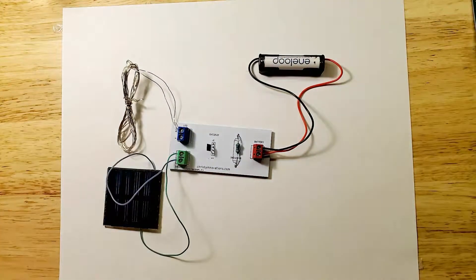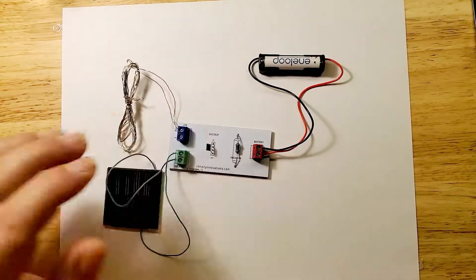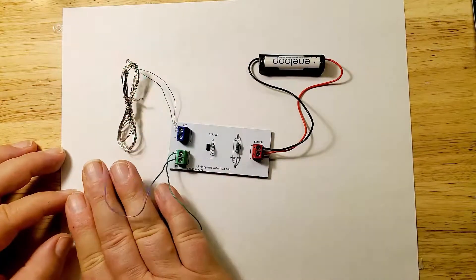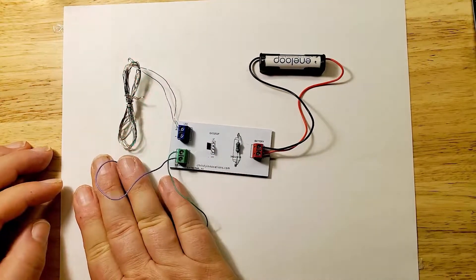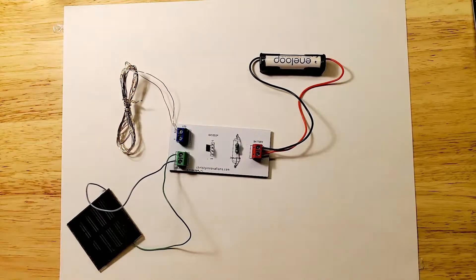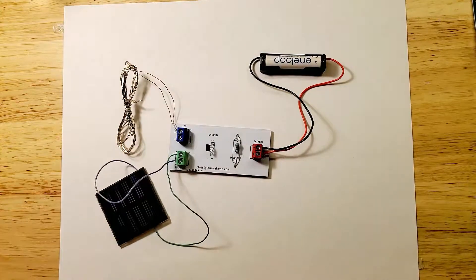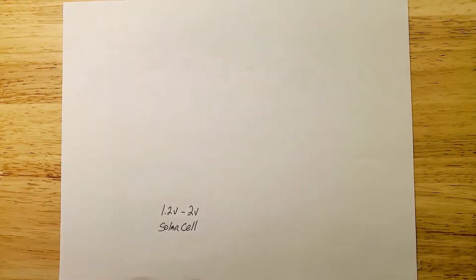These pieces are connected the exact same way they were on the dollar store solar light. There are several ways you can make the connections without any fancy equipment or circuit boards. The most important thing to know is which wires connect to which pins.